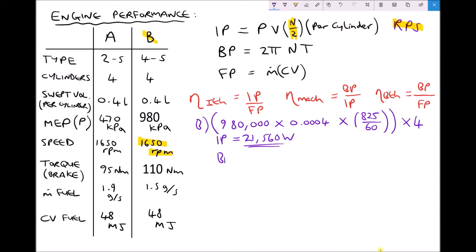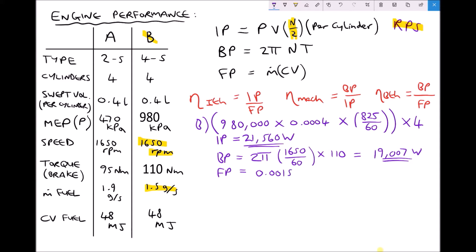Next we can calculate our brake power using the same formula: 2π × (1650/60) × 110 Nm torque, giving us a brake power of 19,007 watts. Finally we calculate our fuel power: the mass flow rate is 1.5 grams per second, divided by 1000 gives 0.0015 kg/s, multiplied by the calorific value of 48 megajoules per kilogram (48 × 10⁶), giving us a fuel power equal to 72,000 watts.